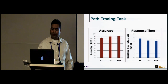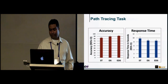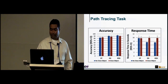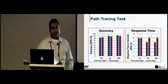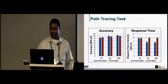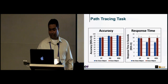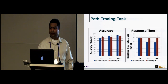For the path tracing task, accuracy was higher for eye-tracked dynamic stereo and lower for static stereo. Response times were lower for dynamic stereo and eye-tracked dynamic stereo compared to static stereo. When divided by object condition, static and dynamic performed similarly with a closer object, and dynamic stereo and eye-tracked dynamic stereo performed similarly without a closer object. Response time was less when there was no closer object.